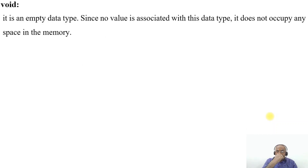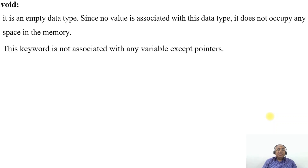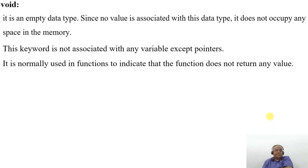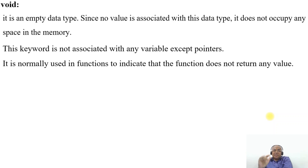What is void? It is an empty data type. Since no value is associated with this data type, it does not occupy any memory or space in the memory location. This keyword is not associated with any variable except pointers. It is normally used in functions to indicate that the function does not return any value.